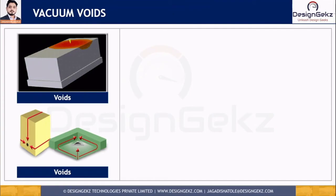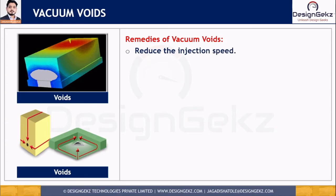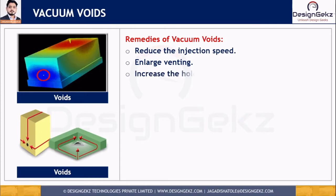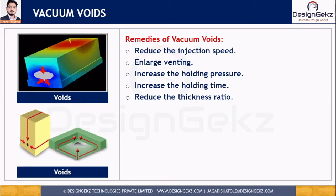Now, what are the remedies for vacuum voids? By adjusting the molding conditions to eliminate the air trap, we can modify the filling pattern by reducing the injection speed, or we can mitigate it by enlarging the venting. We can provide proper venting in the cavities to eliminate trapped air, and we can also mitigate this defect by increasing the holding pressure as well as the holding time. Another approach is altering the part geometry or mold design — such as reducing the thickness ratio and locating the gate at the thickest part.